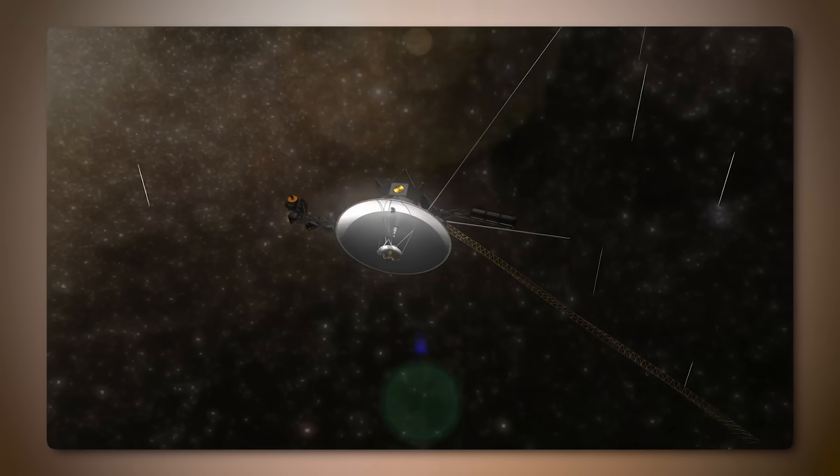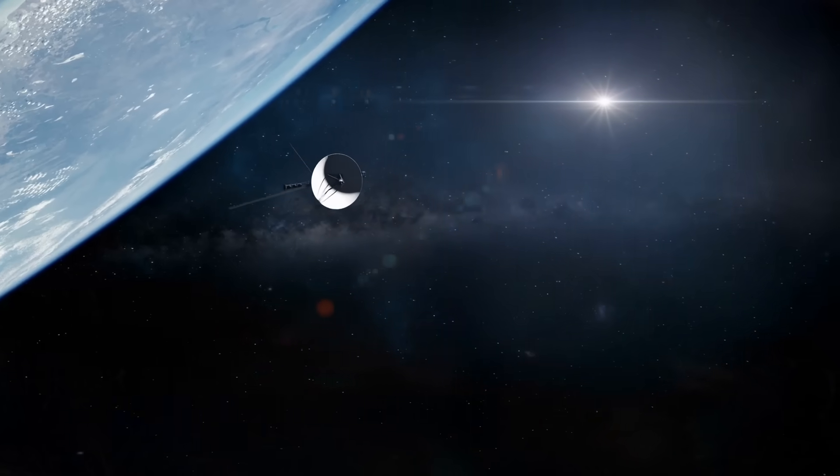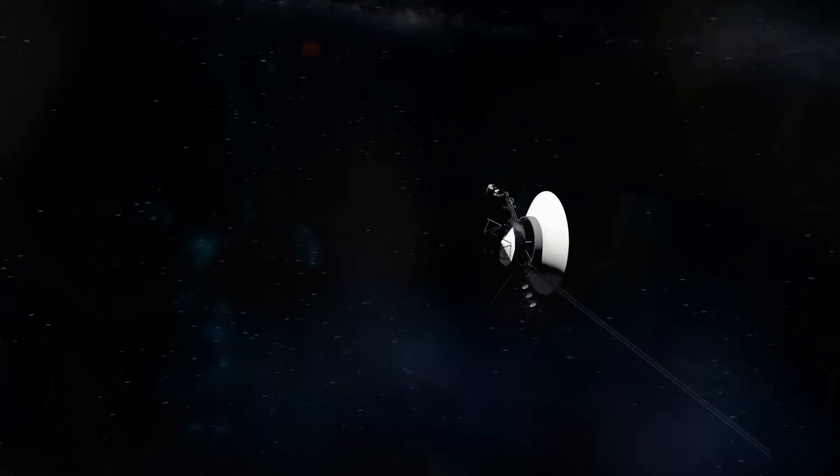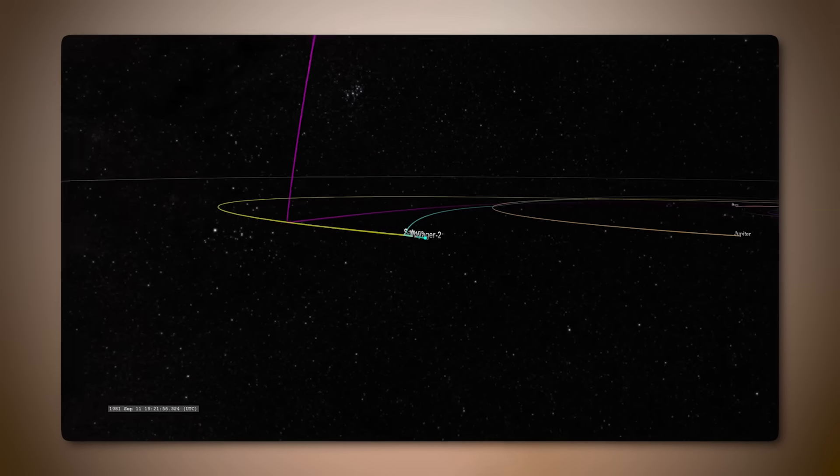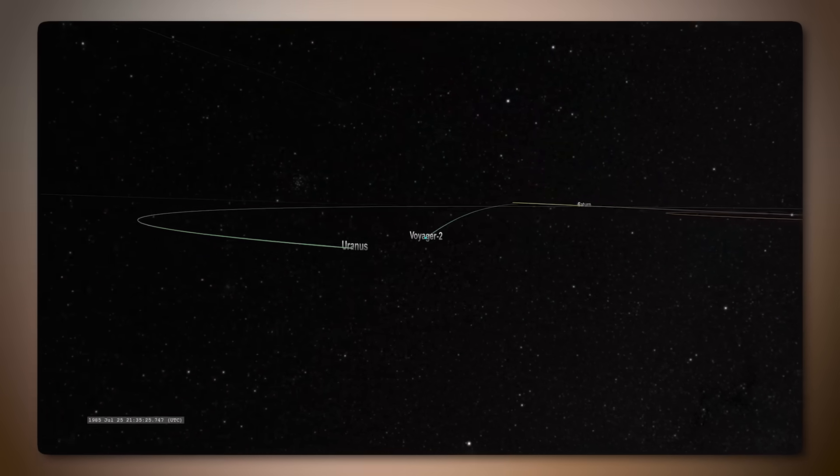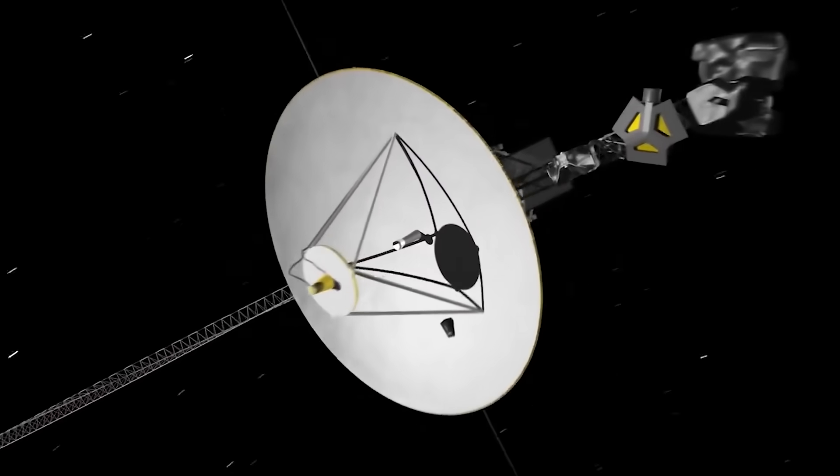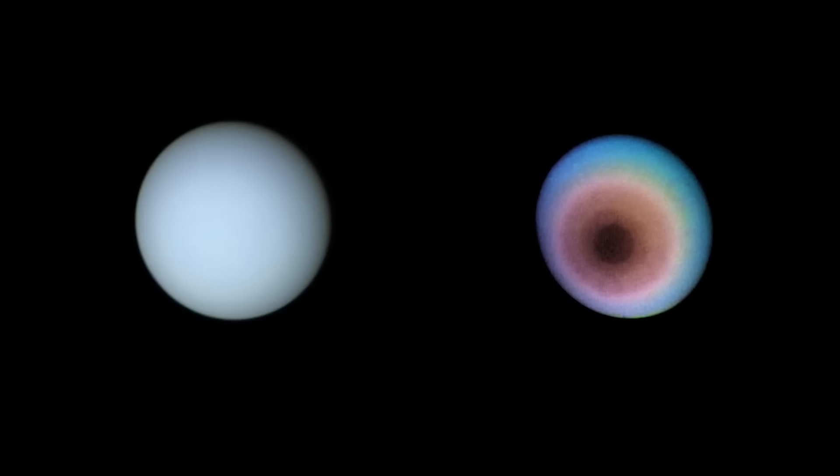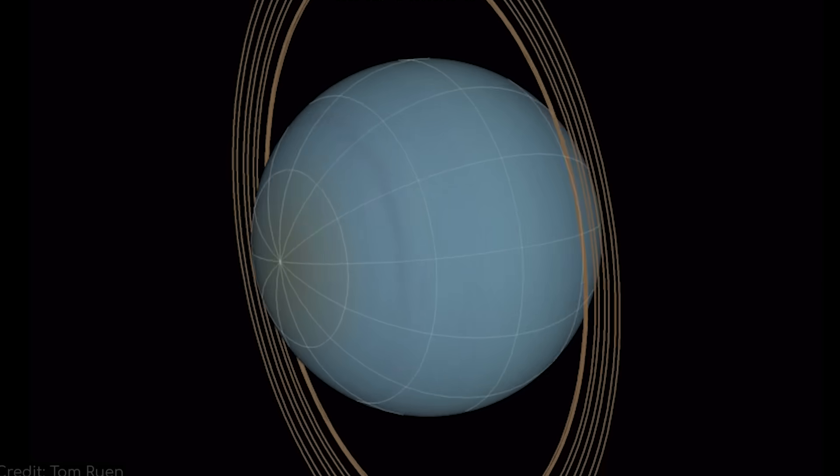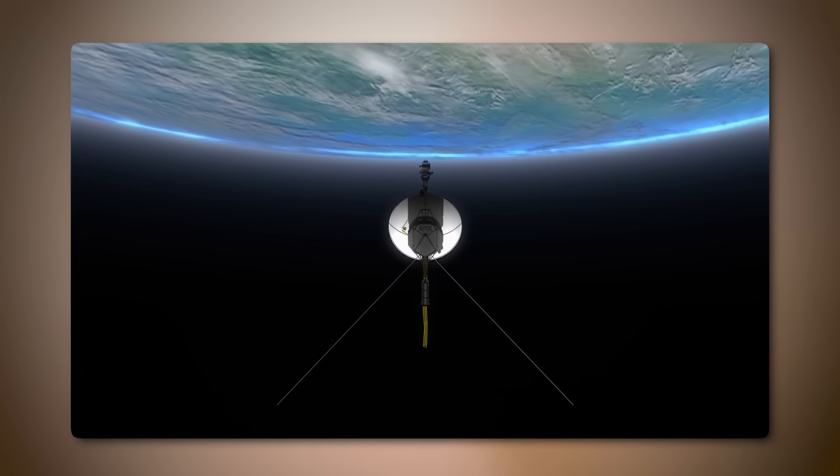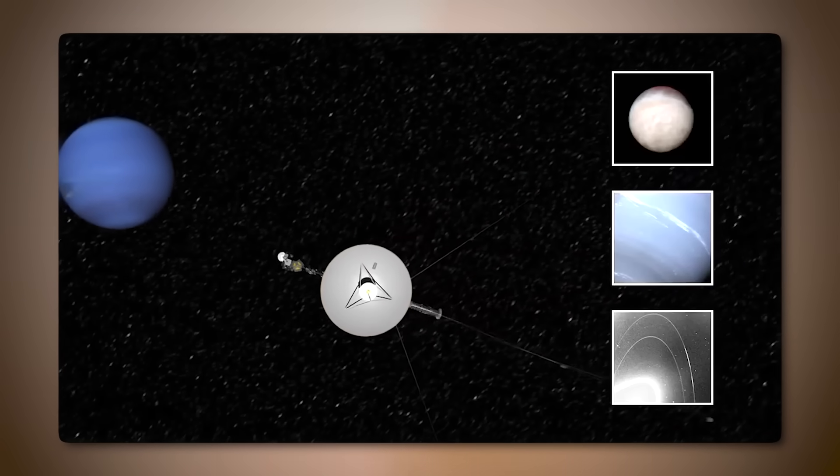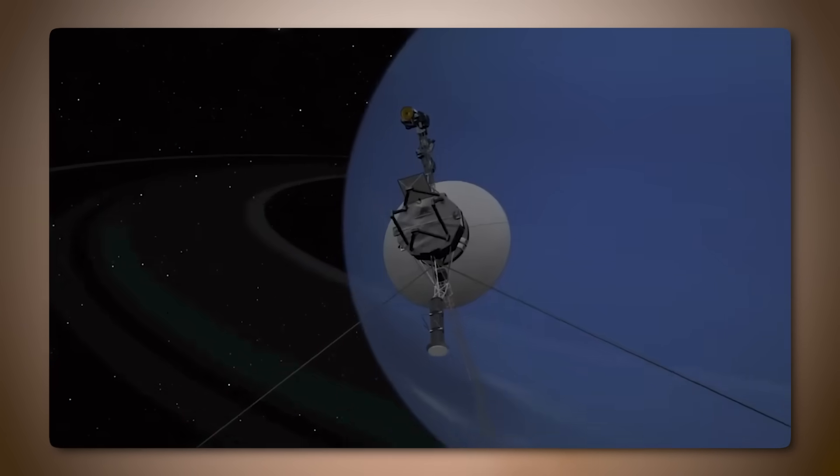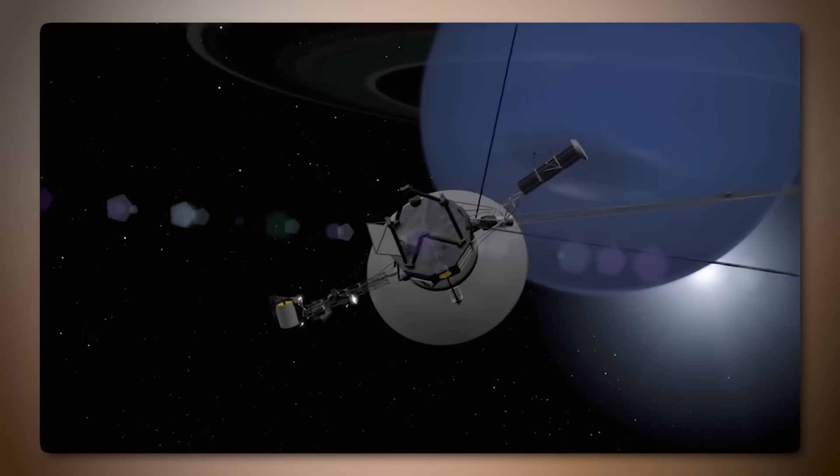The Voyager spacecraft are equipped with a suite of instruments tailored for studying the outer planets and the interstellar medium. While their power is limited, these instruments have proved invaluable for the groundbreaking observations they continue to make. The main instruments aboard Voyager include Imaging Science System (ISS). Although no longer operational due to the probe's distance from the sun, the ISS captured breathtaking images of Jupiter, Saturn, Uranus, and Neptune, as well as their moons. Plasma Spectrometer measures the properties of plasma in space. This instrument was crucial in understanding the solar wind and its interactions with the interstellar medium. Cosmic Ray Subsystem detects cosmic rays, high-energy particles from outside our solar system.